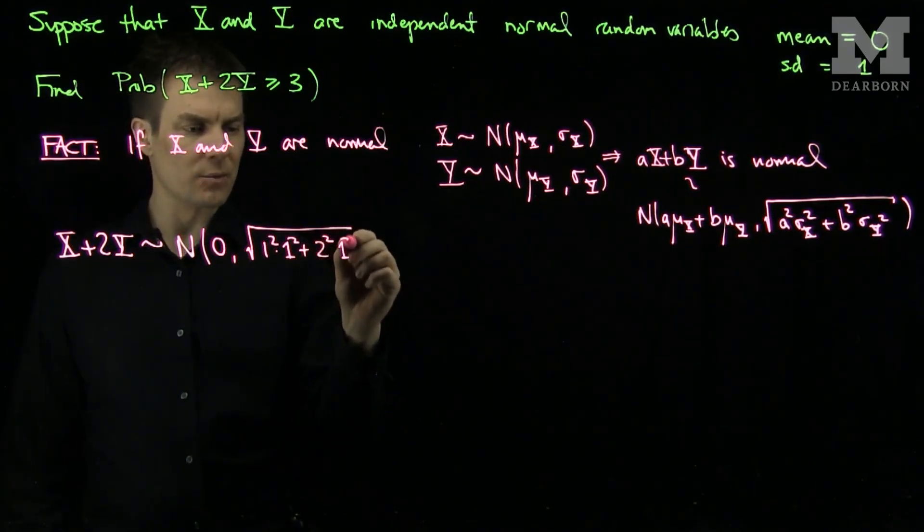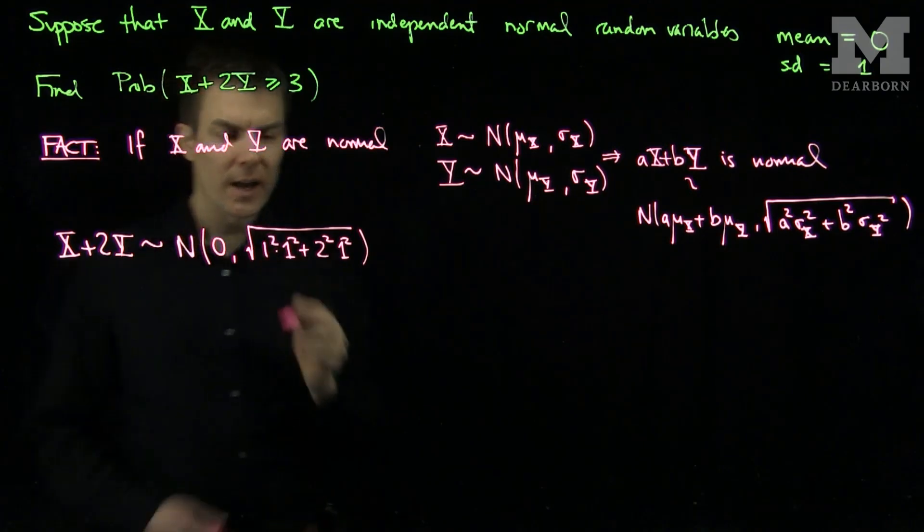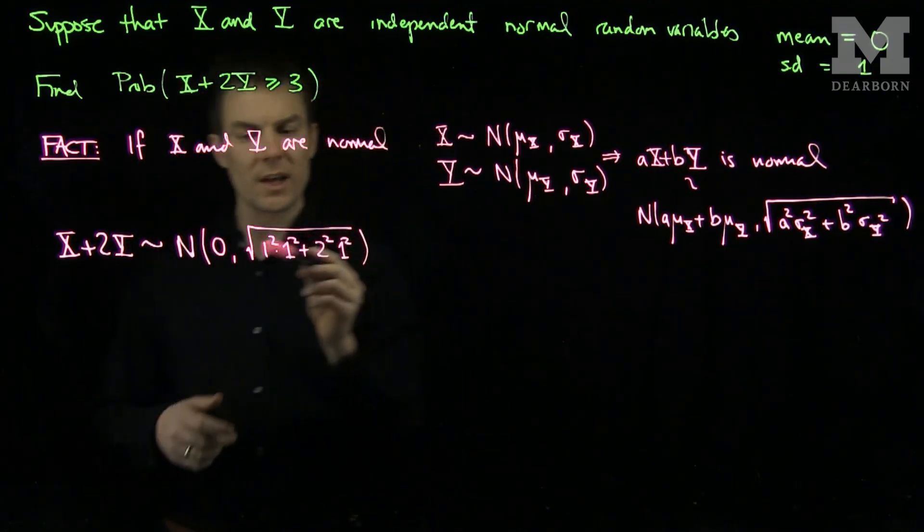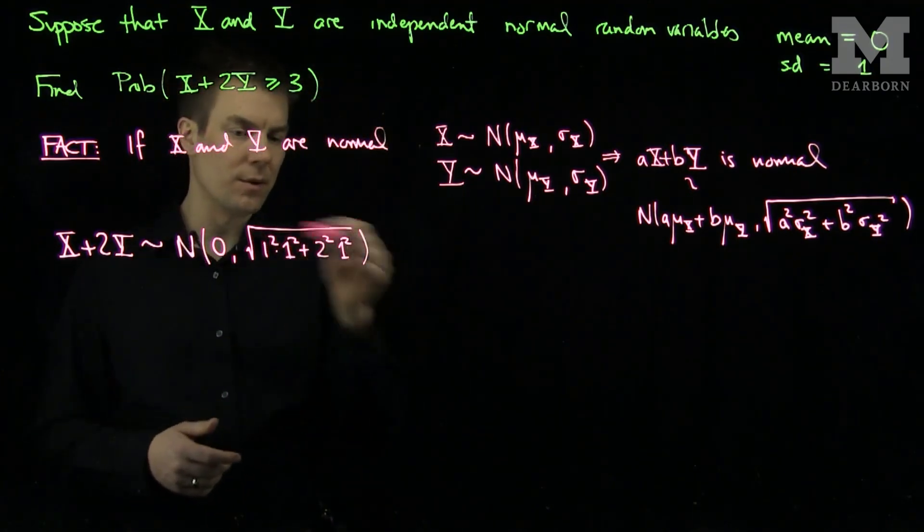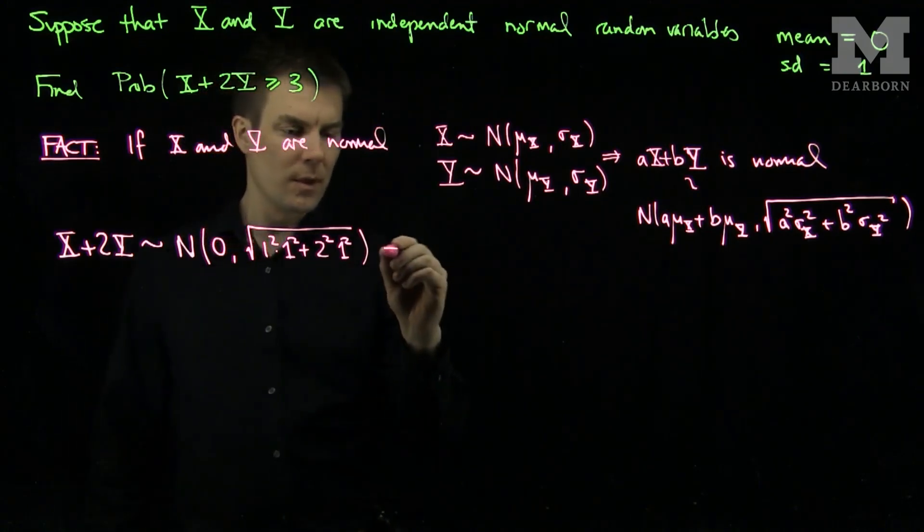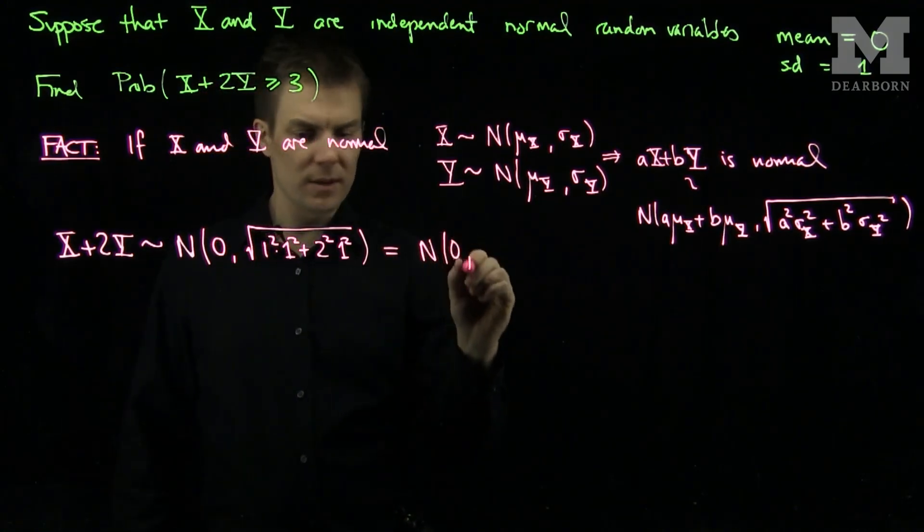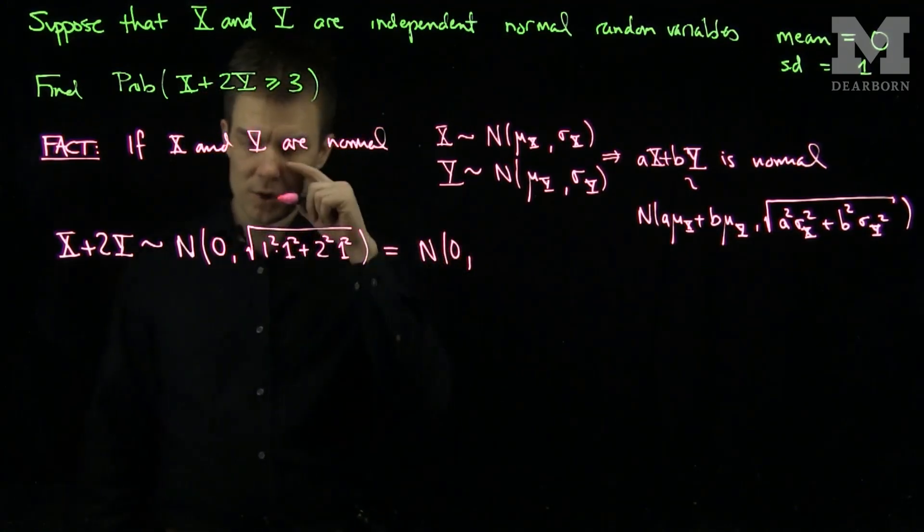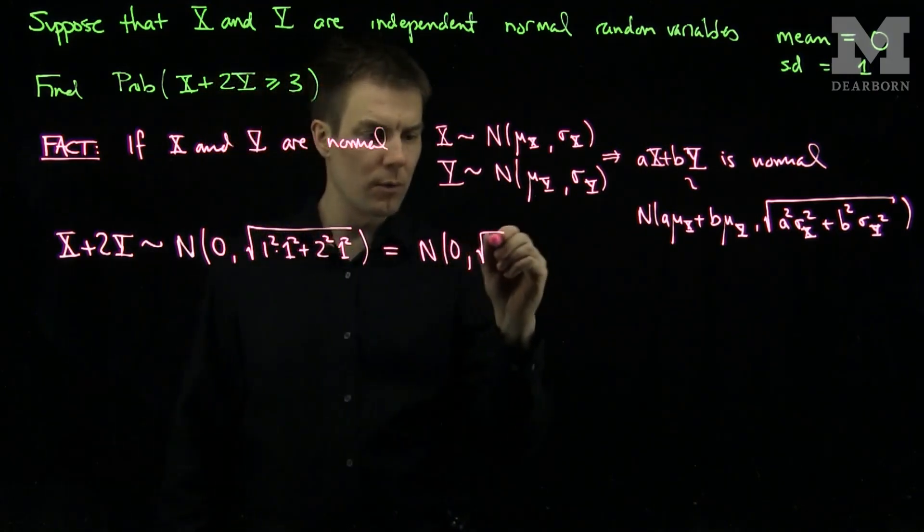And just as a note, often times in books you'll see this written without the square root sign. I've written this with a standard deviation. So this is normal with mean 0 and standard deviation √5.